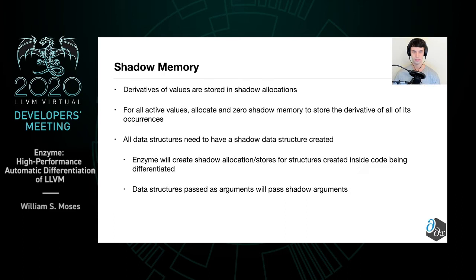We also use what's known as shadow memory to store the derivatives of values. For all active values, we'll go ahead and allocate and zero shadow memory to store the derivatives of all of their occurrences. All data structures also need to have a separate shadow data structure created. For anything defined inside of the function that Enzyme is differentiating, Enzyme will transparently create shadow allocations and stores. If you pass in a data structure as an argument, you'll also need to pass in a shadow version of that data structure. This is also useful for getting the results of a gradient out — for example, if you had a sum function with a vector input, you'd need a separate shadow vector to store the output of the gradient.